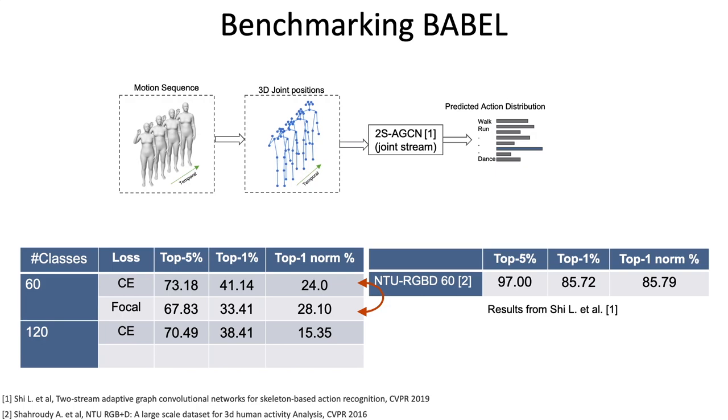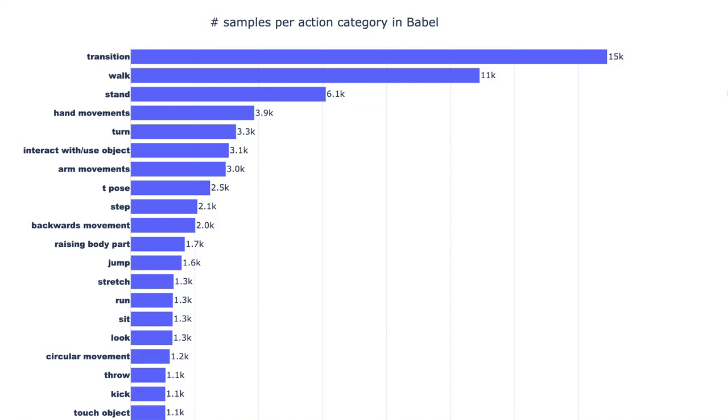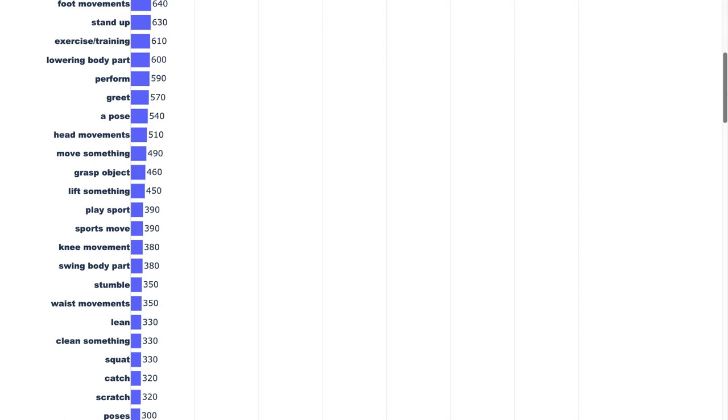To reduce the class bias in model performance, we train the model with focal loss, an approach to handle imbalanced class distributions. We observe a higher performance with focal loss, with still a lot of room for improvement.